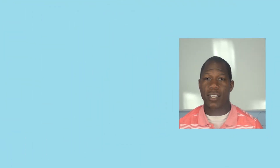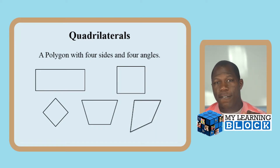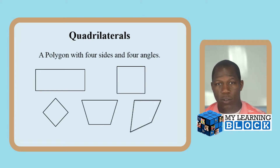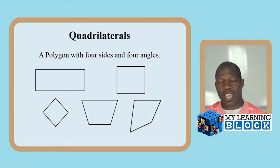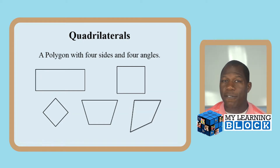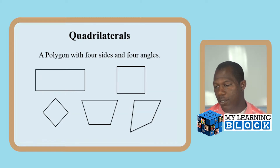Let's talk about what quadrilaterals are, because you're working with your child and they're coming home with quadrilaterals or whatever they come home with. Quadrilaterals are polygons with four sides and four angles. Some people forget the whole part about the angles — don't forget they have four angles and four sides.